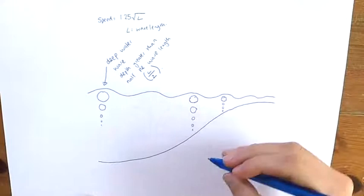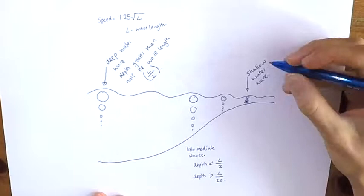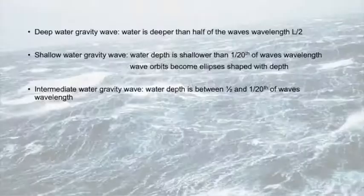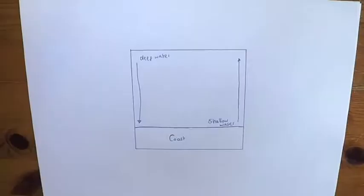When the depth of the ocean is less than 1/20th of the wavelength of the wave, this then becomes a shallow water gravity wave. The wave orbitals of the shallow water gravity wave become ellipsis shaped with depth, causing the wave to lose energy and slow down. In water with a depth shallower than half the wavelength of a wave, the bottom of the ocean becomes increasingly important in controlling the speed of the wave.